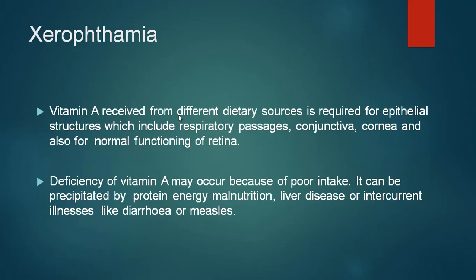An important condition is xerophthalmia, the ophthalmic manifestations of vitamin A deficiency. Vitamin A is received from different dietary sources including green leafy vegetables, papaya, carrot, cod liver oil and other sources. This vitamin is required for the epithelium of the respiratory passages, conjunctiva, cornea, and also for normal functioning of the retina. Deficiency may occur because of poor intake and can be precipitated by protein-energy malnutrition, liver disease, or intercurrent illness such as diarrhea and measles.